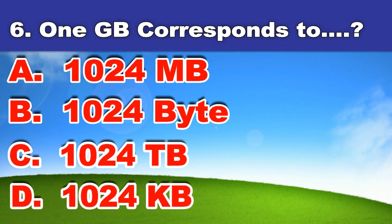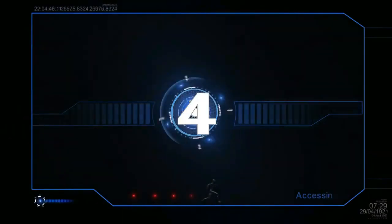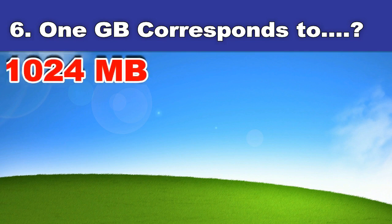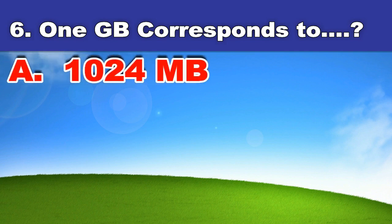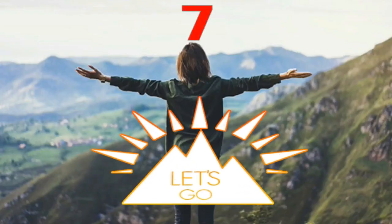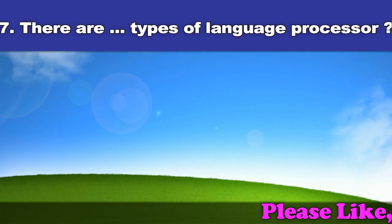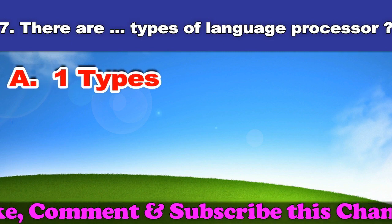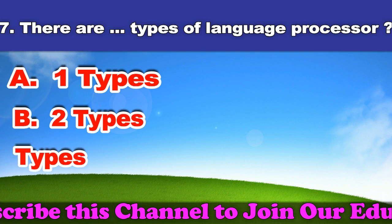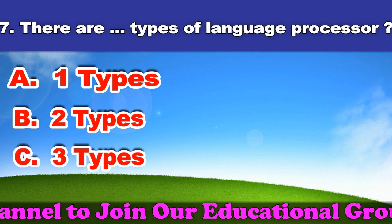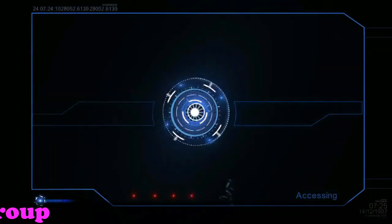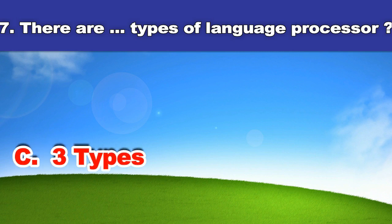Sixth question: 1 GB corresponds to. A. 1024 megabytes. B. 1024 gigabytes. C. 1024 terabytes. D. 1024 kilobytes. And the answer is 1024 megabytes. Seventh question: There are how many types of language processors? A. One. B. Two. C. Three. D. Four. And the answer is 3 types.